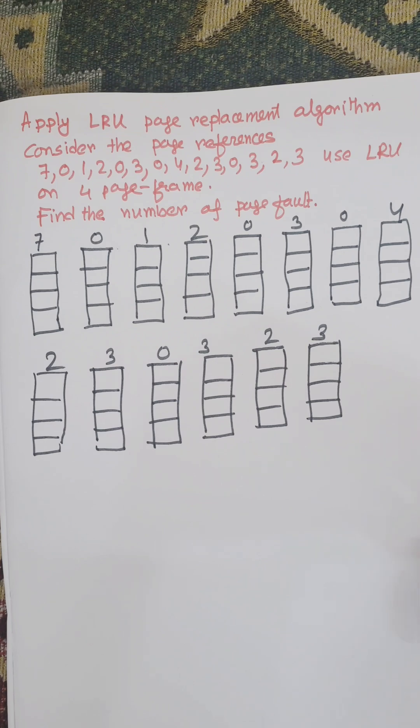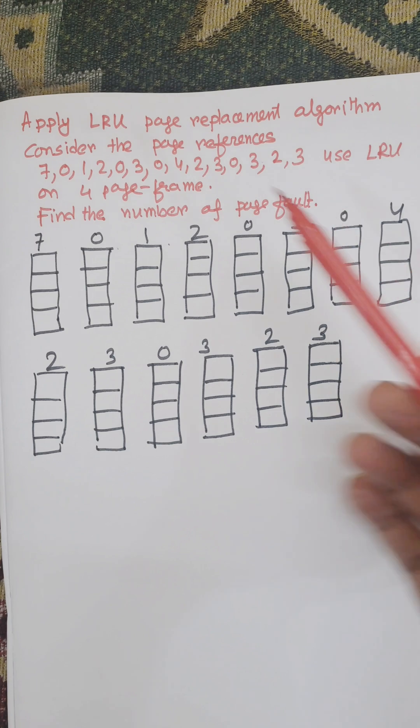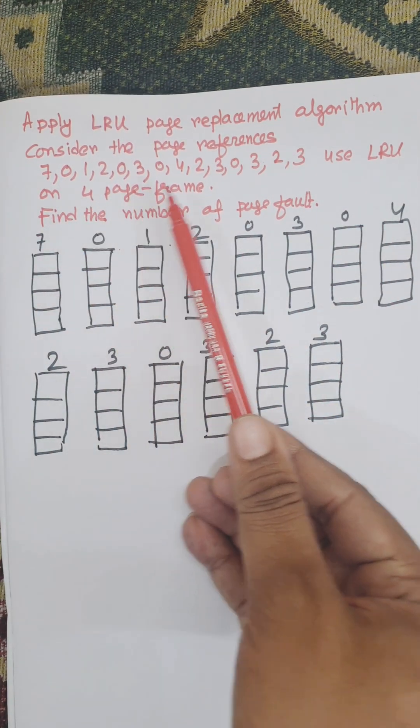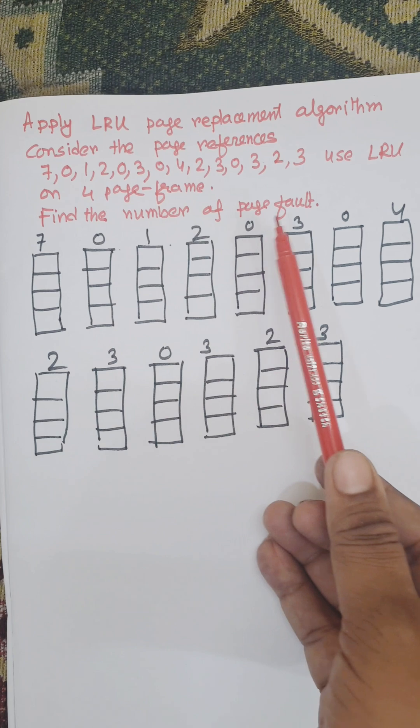The Least Recently Used page replacement algorithm is based on the backward technique. Here, page references are given, and we use four page frames. We need to find the number of page faults.